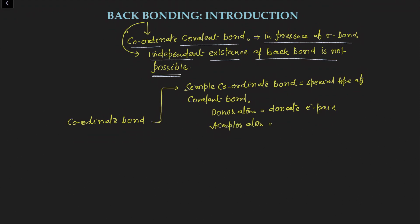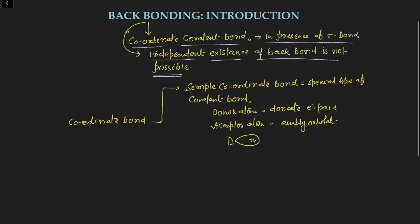There is one donor atom that donates an electron pair, and there is an acceptor atom that has one empty orbital. When the donor atom — having a filled orbital with a lone pair of electrons — donates its lone pair to the empty orbital of the acceptor atom, a coordinate bond forms. After formation, this bond becomes covalent and works as a sigma bond. This is the meaning of simple coordinate bond.